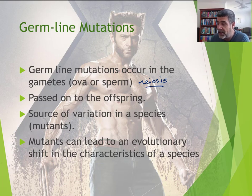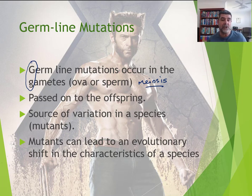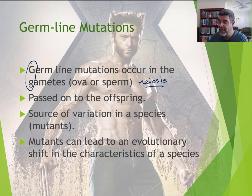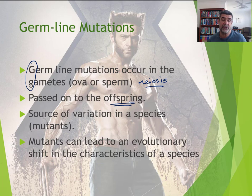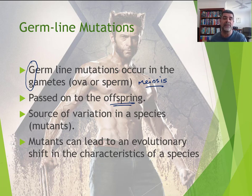Germline mutations — if you think G for germ and G for gamete — that's a way to remember that germline mutations are the ones that occur in the gametes. This means that any mutation can be passed on to the offspring, and because it occurred in that first cell, it can be replicated into all of the cells of the offspring.